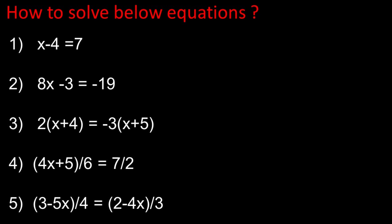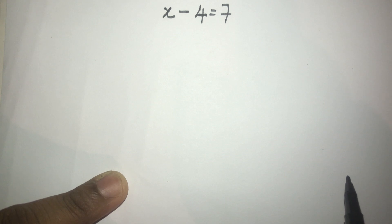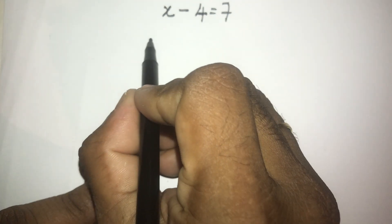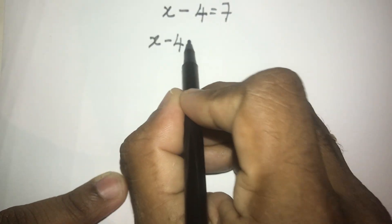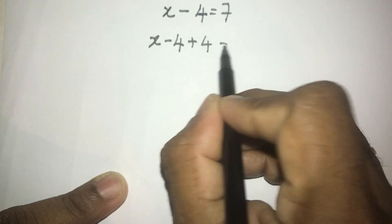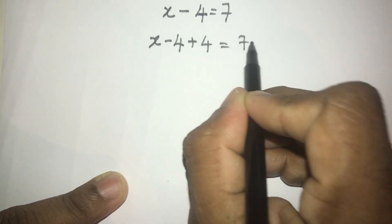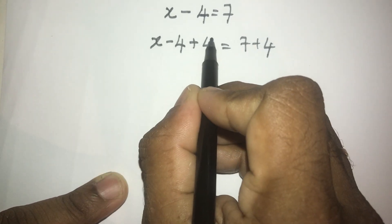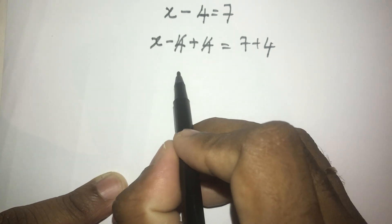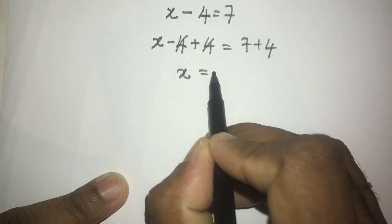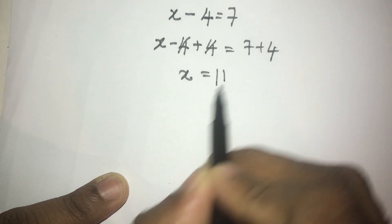In order to solve this equation, we need to add four to both sides. So here, plus four — seven plus four — this will cancel, and x is equal to eleven.